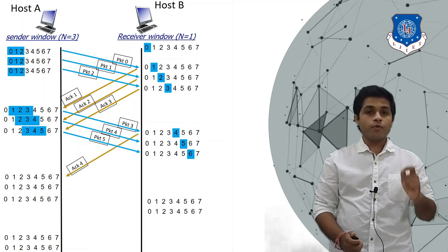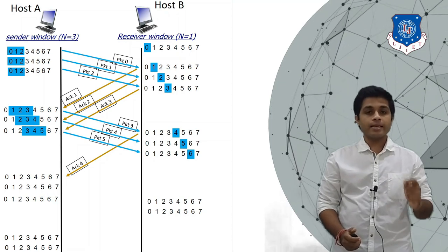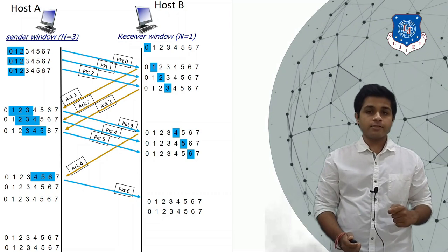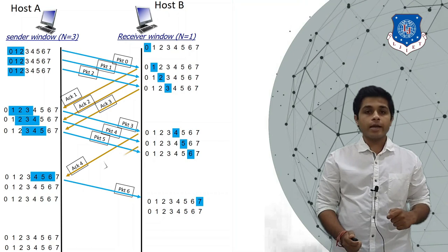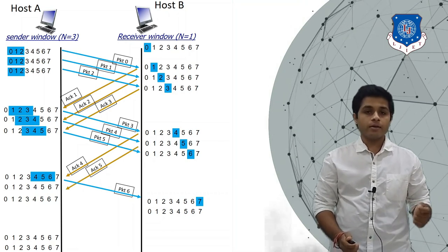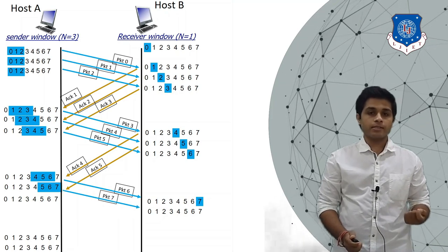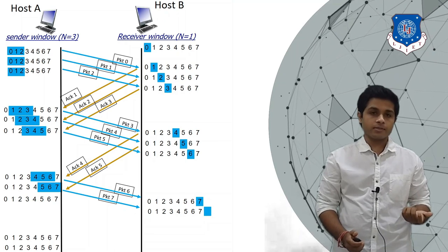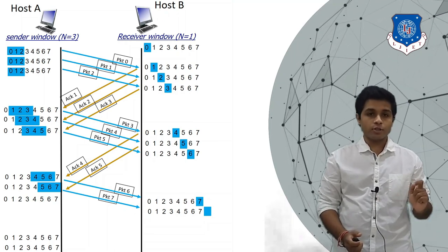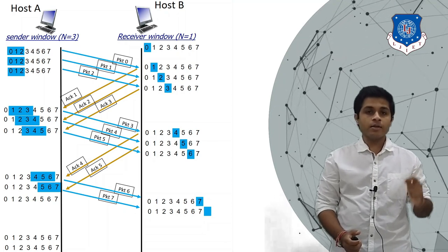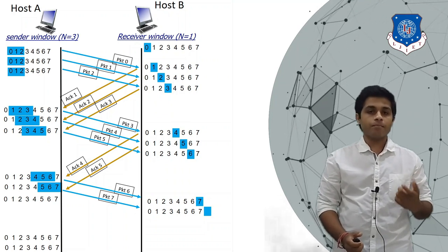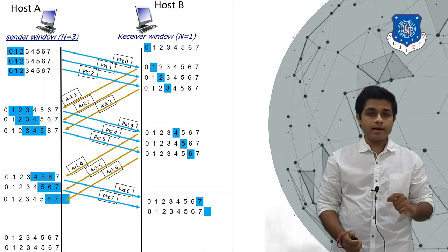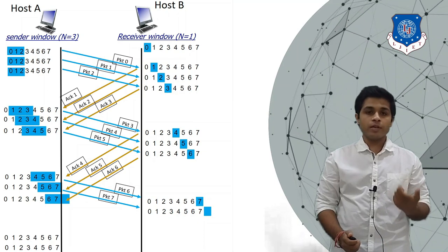A receives acknowledgement four, the sender's window slides, and A sends packet six. B receives packet six, so the window slides to seven. Then A receives acknowledgement five, window slides, and A sends packet seven. B receives packet seven, the window slides, and B is not expecting any more packets. Currently packets five, six, and seven are in transmission with no acknowledgements yet. A waits, receives acknowledgement six (ACK 6), window slides, and there is no new packet to transmit.